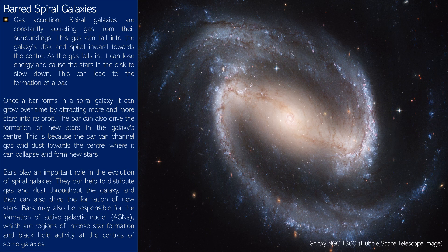Once a bar forms in a spiral galaxy, it can grow over time by attracting more and more stars into its orbit. The bar can also drive the formation of new stars by channelling gas and dust towards the center, where it can collapse and form new stars. Bars play an important role in the evolution of spiral galaxies, helping to distribute gas and dust throughout the galaxy. Bars may also be responsible for the formation of active galactic nuclei, or AGNs — regions of intense star formation and black hole activity at the centers of some galaxies.